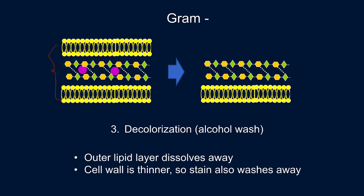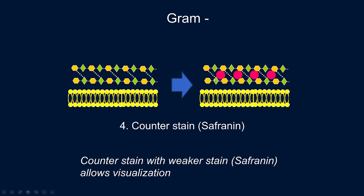When you do the alcohol wash, the alcohol strips away the outer lipid layer, leaving an exposed thin cell wall with the stain crystals in it. Because it's such a thinner cell wall, the wash step results in loss of that stain from the cell wall as well. Then we counter stain with safranin, which allows us to visualize the bacteria. So the gram negative bacteria shows up as pink or light red, whereas the gram positive still appears as violet.